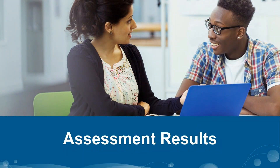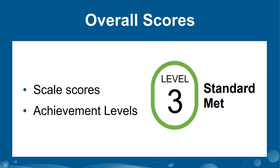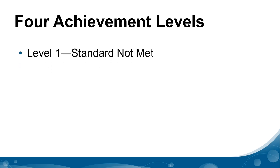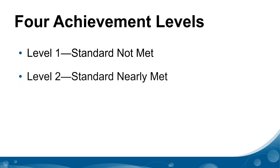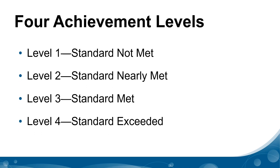Let's shift gears and talk about how results are reported for the CAST. A three-digit scale score and an achievement level is generated based on student performance. The achievement level corresponds to one of four performance levels: Level 1, Standard Not Met; Level 2, Standard Nearly Met; Level 3, Standard Met; and Level 4, Standard Exceeded.